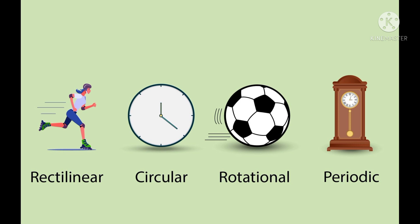In this picture you can see a boy running on a straight road is rectilinear motion, a clock is circular motion, and a simple pendulum is periodic motion.